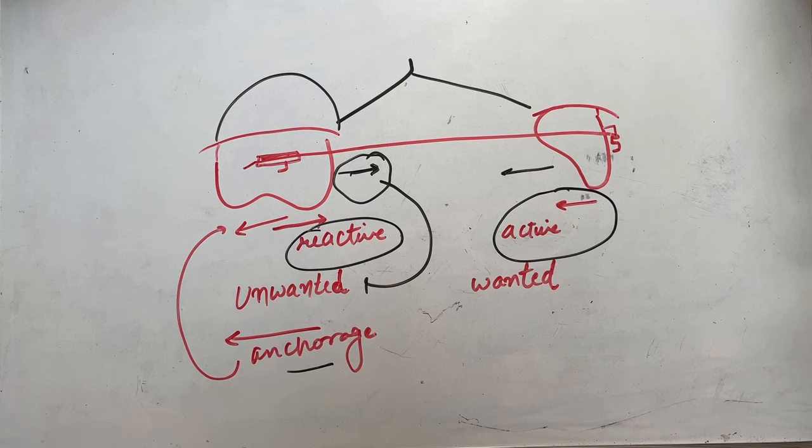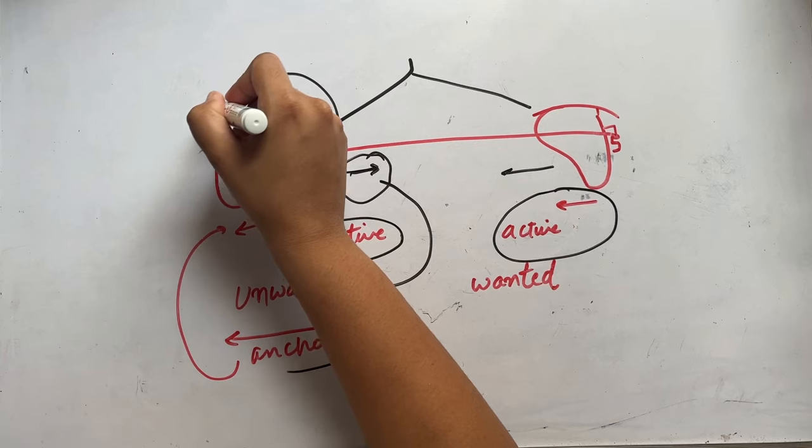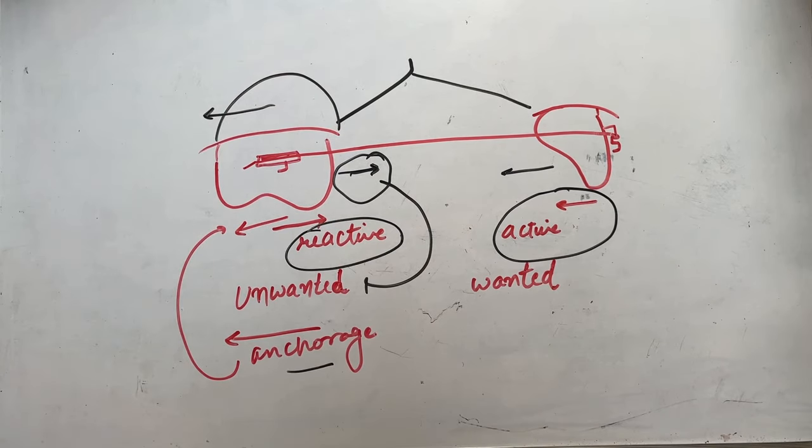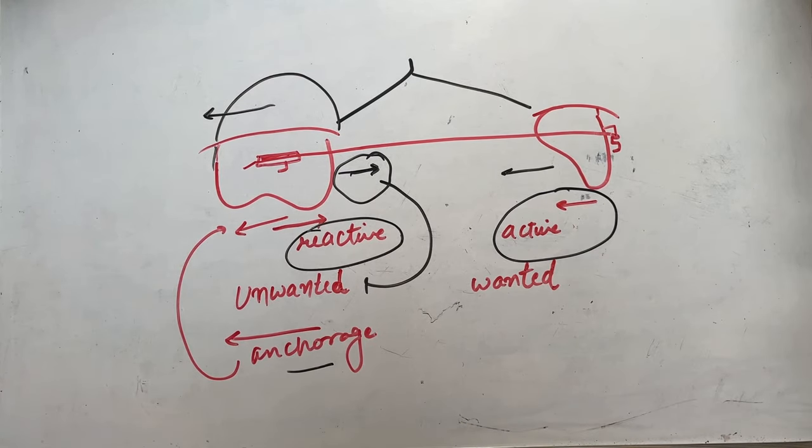For example, transpalatal arch is used for anchorage. Transpalatal arch will provide a distal force to the molar, so this force will prevent the molar to tip mesially, which will be our unwanted movement, and hence this will resist the unwanted tooth movement that is known as anchorage.